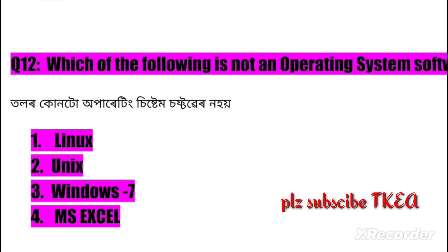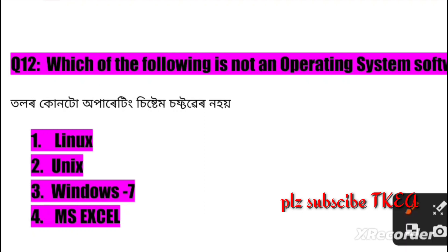Question number twelve: Which of the following is not an operating system software? Option one: Linux, two: Unix, three: Windows 7, four: MS Excel. The right answer is number four: MS Excel.